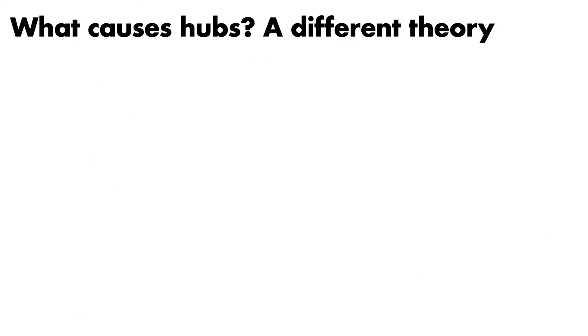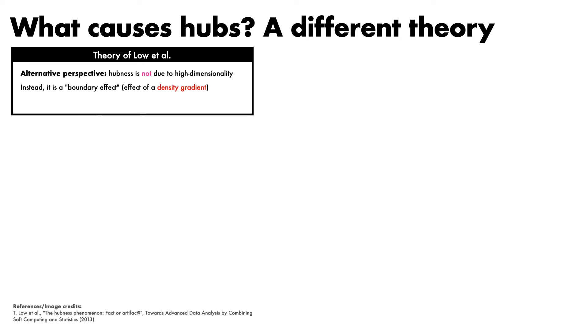To round out our understanding of hubness, it's also interesting to consider a competing hypothesis for the cause of hubs. We examine the elegant theory of Lowe et al., which takes the alternative perspective that hubness is not directly due to high dimensionality. Instead, it is a boundary effect, or more broadly, an effect of density gradient in the data. As a consequence, it is really an artefact of the data generation process rather than something intrinsic to high dimensions.